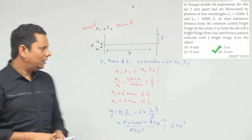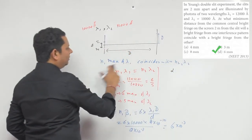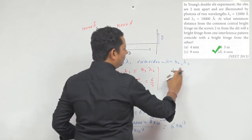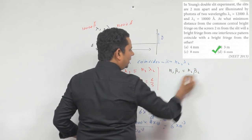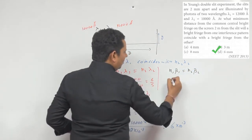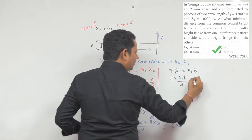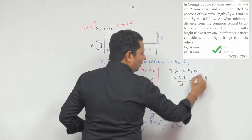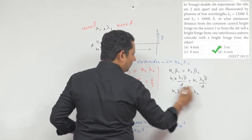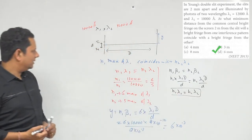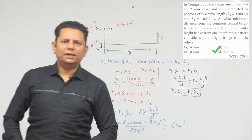Option D is the right answer. The formula comes from the condition that n1 × beta1 equals n2 × beta2. Substituting beta equals lambda D/d, the D and d cancel, giving n1 × lambda1 equals n2 × lambda2. This is the formula used to derive the result. So option D is correct.